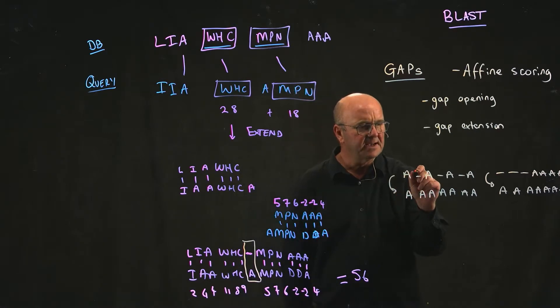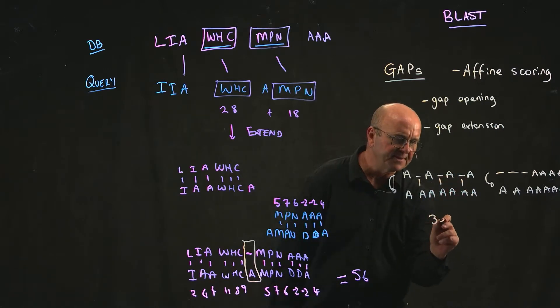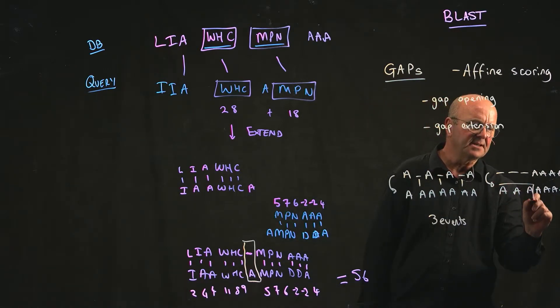In this case we have to make a change here, a change here, and a change here. So we've got three events. In this case we just delete these three things and so we've got one event.